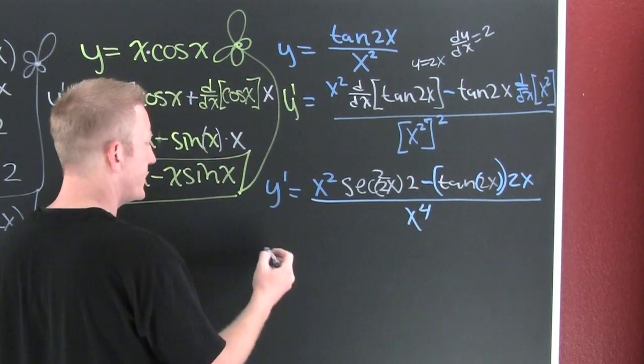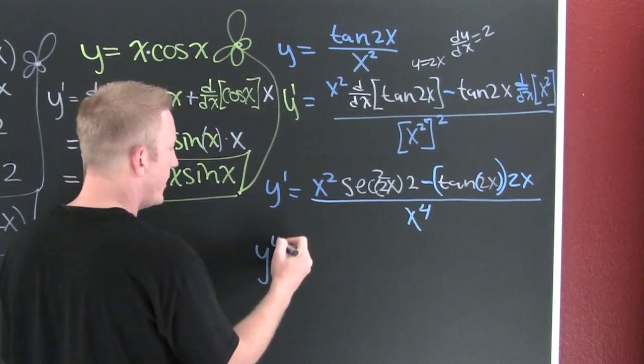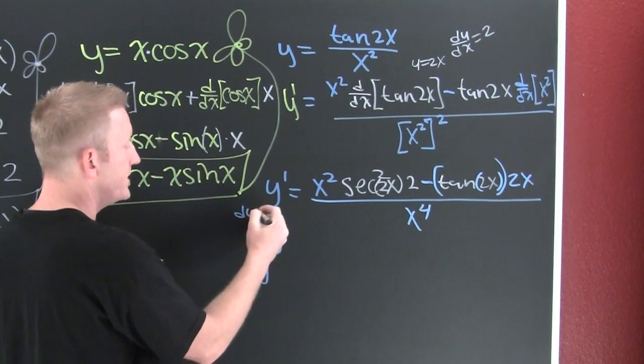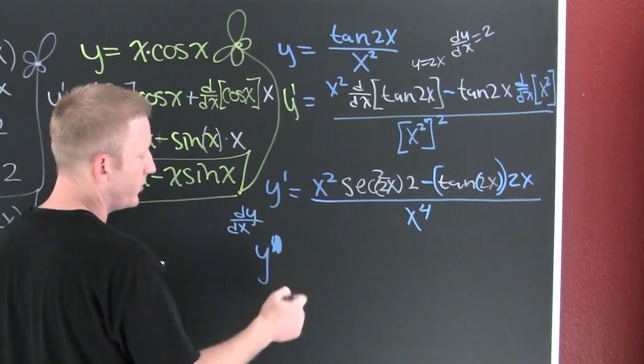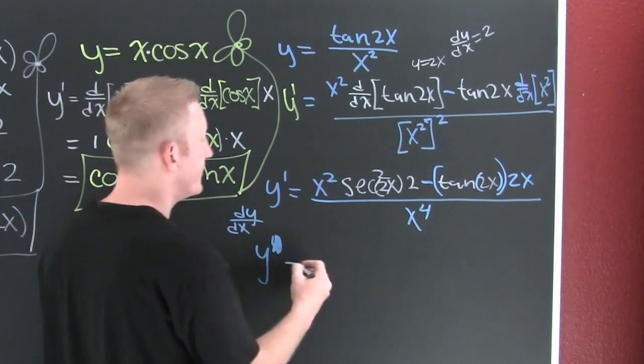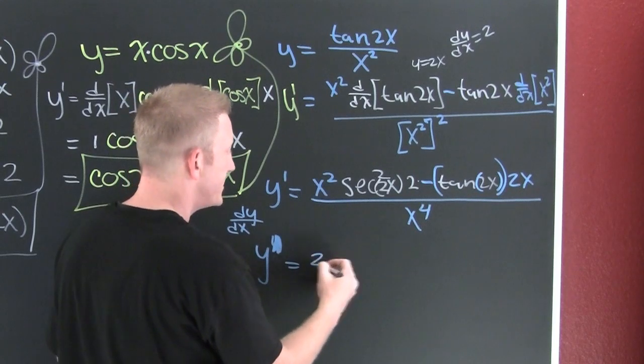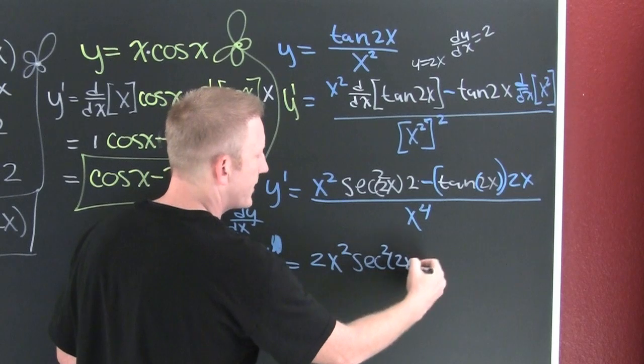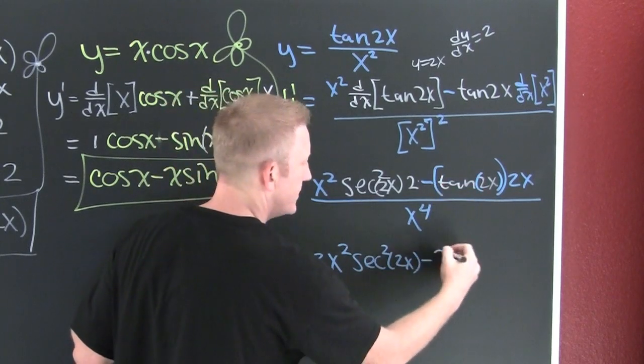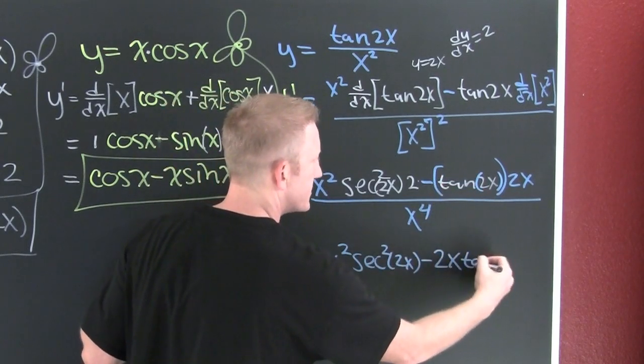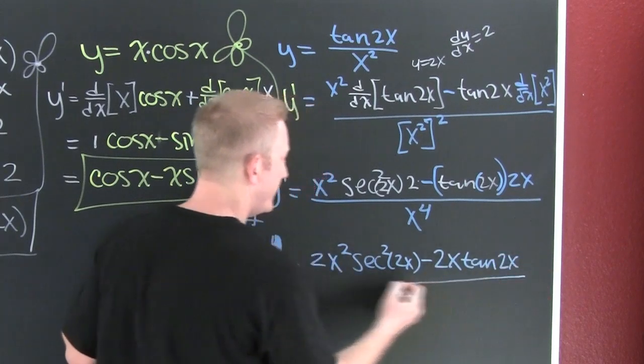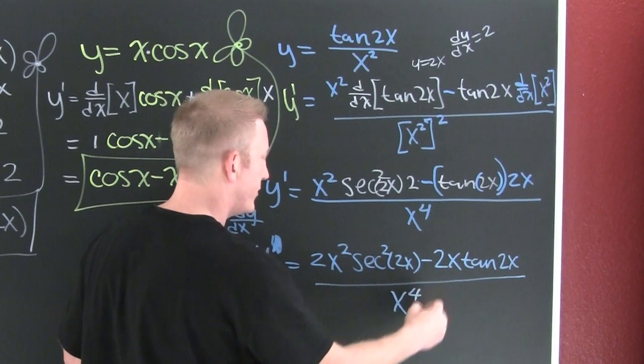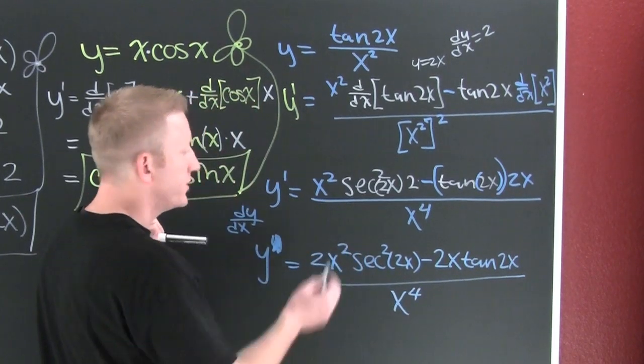That's x to the fourth. Just one more step, clean it up, rather than in a more nicer form. y prime, my first derivative, also dy dx, depending on whose notation you want to use. That's a big fat prime. This is 2x squared secant squared 2x minus 2x tangent 2x all over, wait for it, x to the fourth. Now you can still clean that up a little bit, sure. You can pull an x out and reduce it.